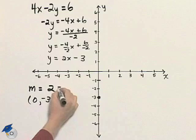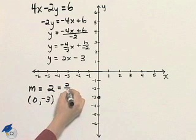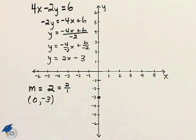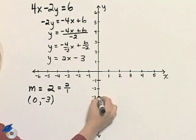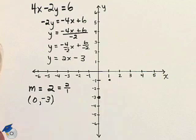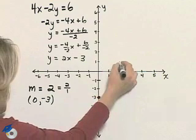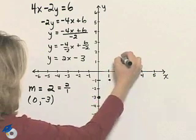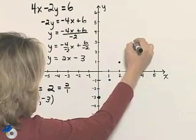The slope is 2, which you can think of as 2 over 1. So a rise of 2 for every run of 1. So I'll go up 2, right 1. And then I can continue doing that throughout the length of the graph that I have.